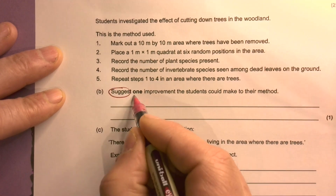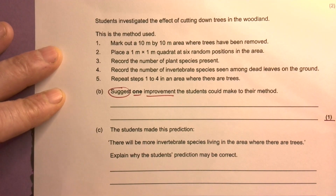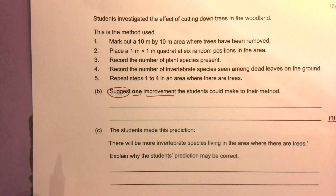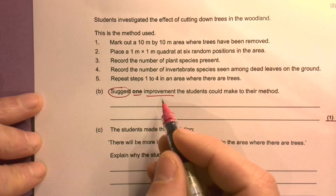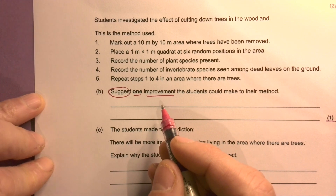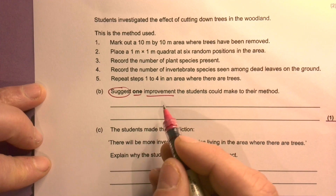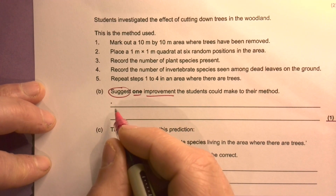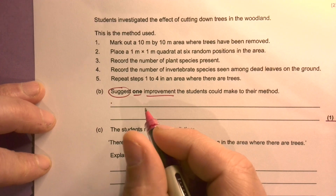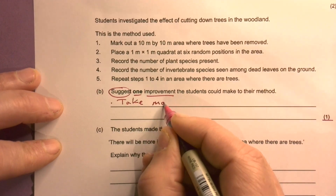Suggest one improvement that they could do. The easiest way to make any improvement is to get more results. So they could repeat results or they could do more quadrats - take more readings.